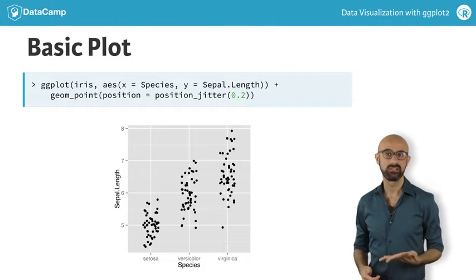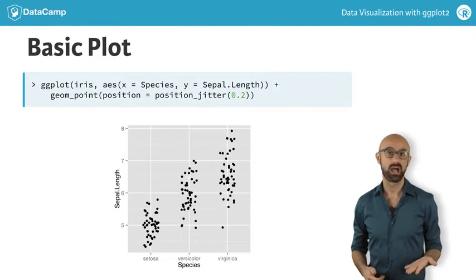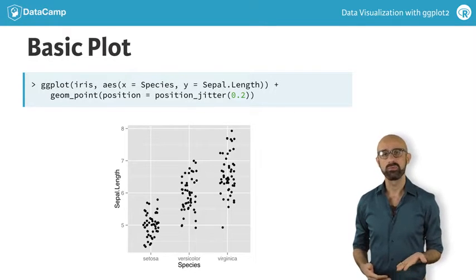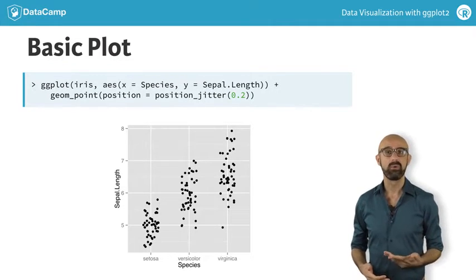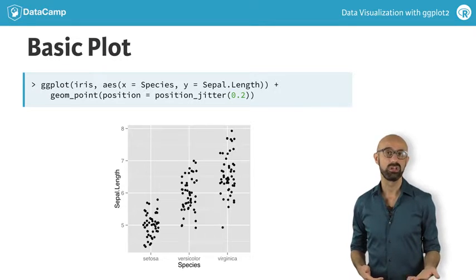Here, sepal length is described by the three species of the iris dataset. Previously we asked how many observations we had in each species, but here we are dealing with the distribution of a continuous variable. What can we do with this data?